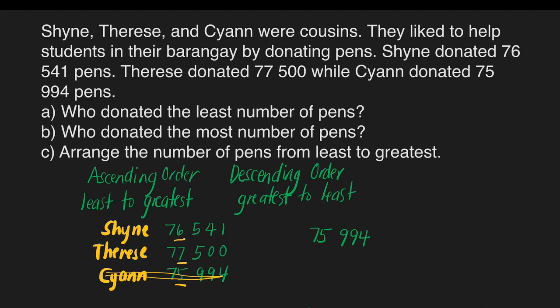And we can focus on Shine and Therese. Which of these two numbers have a lesser value? Yes, the answer is 76,541. And the last, we can have here 77,500.